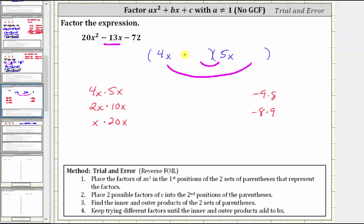Which means we would never use a plus 8 or minus 8 in this binomial factor, because then the binomial factor would have a common factor of 4.